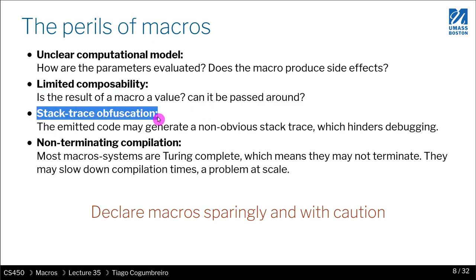Another serious problem that most macro systems have to deal with — or maybe just don't — is that because you are generating code, you are populating the user code with things that are internal, generated by whatever your macro is doing. So there's a variable that didn't exist in your code but was generated by the macro. When you have a runtime error, your user will be faced with that weird code they don't care about and don't know what it is. This is what I'm calling stack trace obfuscation — very confusing outputs because they are leaking out internal information that is just an integral part of a macro system.